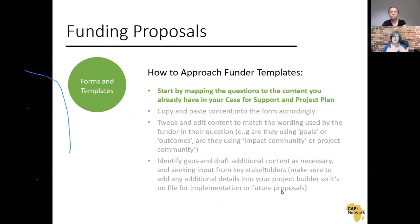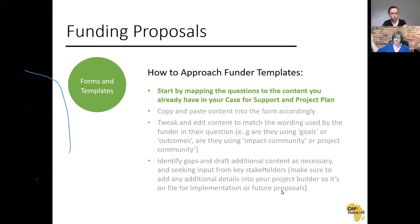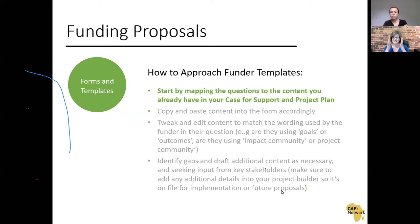So how do you do that? The first thing I do when I approach a funder template is I look at the template and very quickly go through and code each question to the corresponding part of the case for support or project plan, so that you know where you're going to go to get that information. You might note a logic model, a case for support, or a page on org capacity — just make those notes so it's clear what those questions are really asking and you can provide the information you've already got on file.